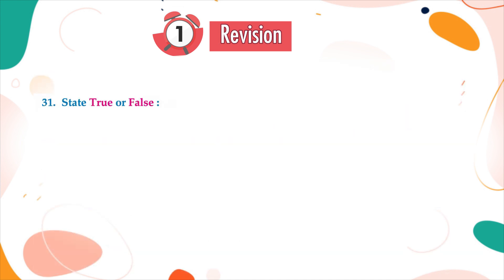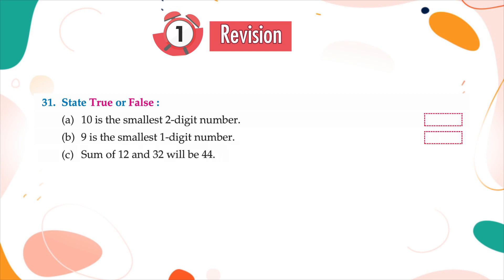31. State true or false? A. 10 is the smallest 2 digit number. B. 9 is the smallest 1 digit number. C. Sum of 12 and 32 will be 44. D. Difference of 28 and 11 will be 17.